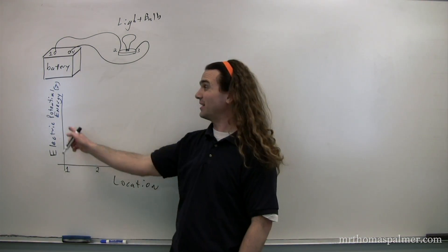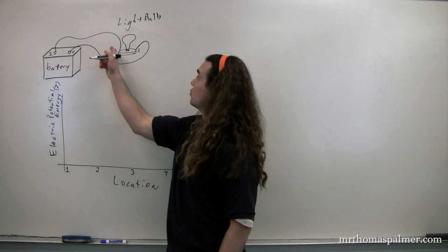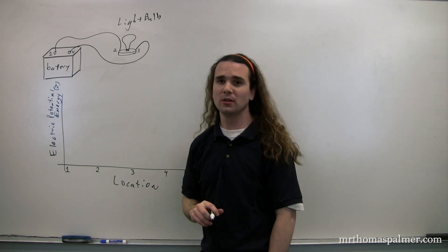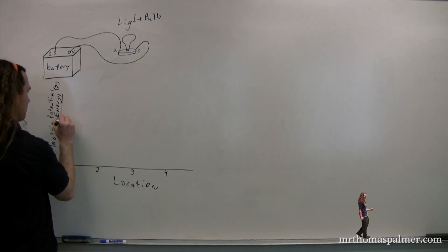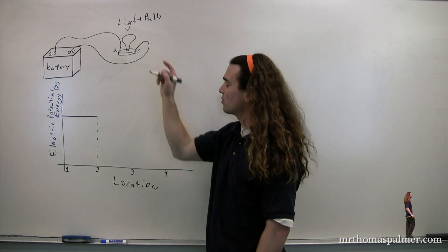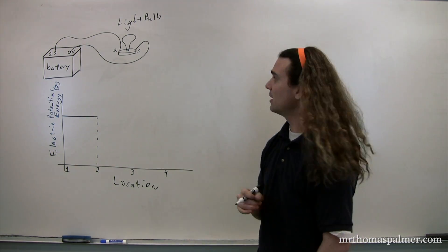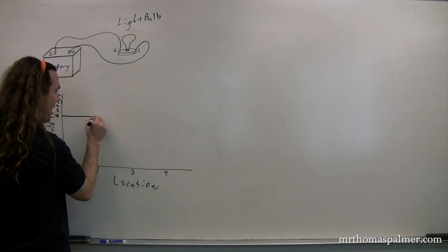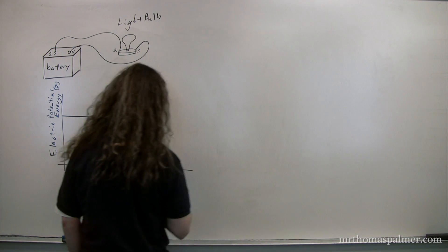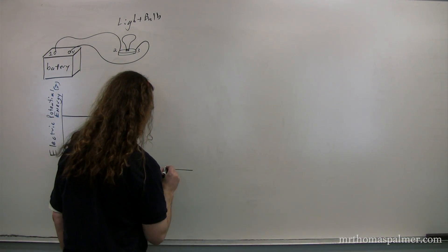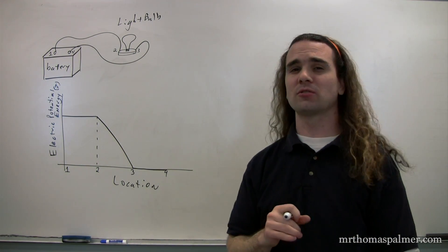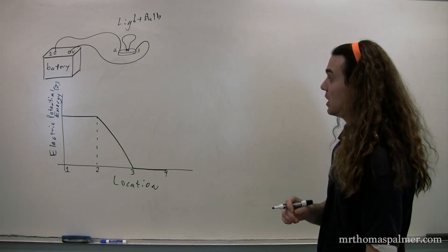We have a graph with electric potential energy in joules on the y-axis and locations 1, 2, 3, and 4 on the x-axis. As you go from the battery to the light bulb — from 1 to 2 — we have no loss in electric potential energy, so we have a horizontal line. As we go across the light bulb from 2 to 3, we have that electric potential energy being converted to other types of energy, so the electric potential energy decreases. Then from 3 to 4, there's no change in electric potential energy. The reason there's no change from 1 to 2 and from 3 to 4 is because those segments are across wires, and we consider wires to have zero resistance, so they have zero loss in electric potential energy.